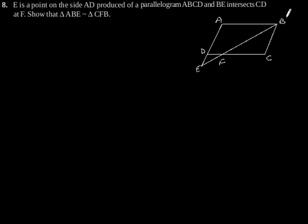Suppose this is our required figure based on the information given in the question. E is a point on the side AD produced of a parallelogram ABCD.